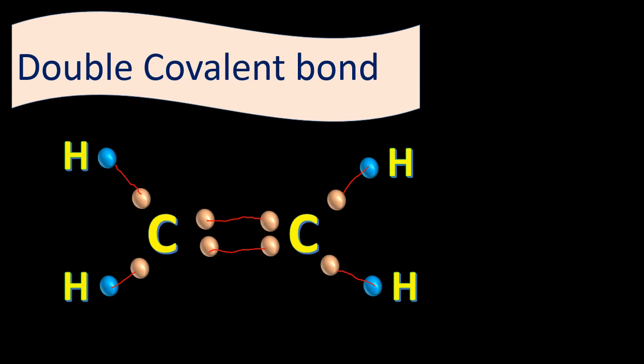In double covalent bonds we use the suffix '-ene', as in alkenes. Taking the example of an oxygen molecule (O₂): it is made up of two oxygen atoms, each having six electrons in its valence shell and requiring eight to complete the octet rule. Each oxygen atom needs a pair of electrons, which it gets from the other oxygen atom, and similarly the other oxygen completes its octet rule the same way.